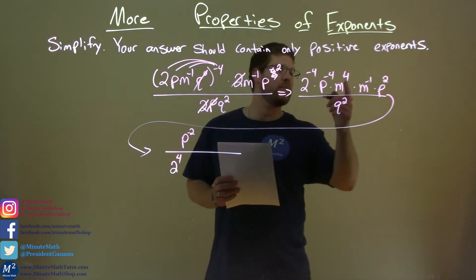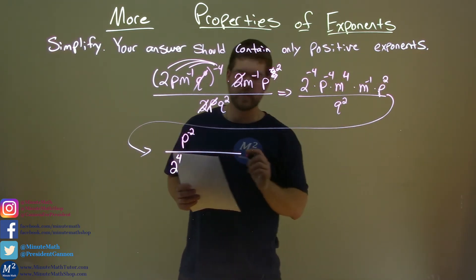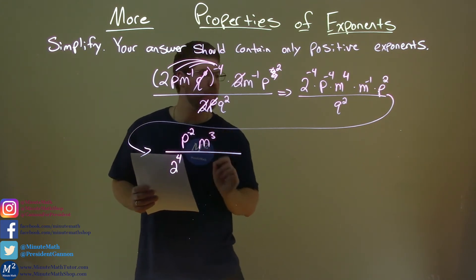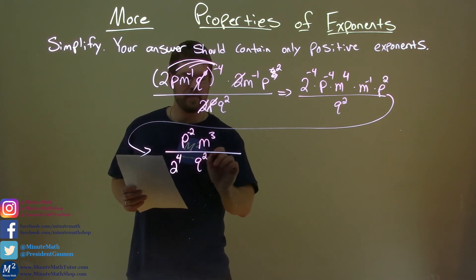Our m's, m to the 4th times m to the negative 1, again, add the exponents, 4 plus negative 1, 3. So we have m to the 3rd power here, and that's everything in the numerator. Let's just have the denominator, q squared. Okay?